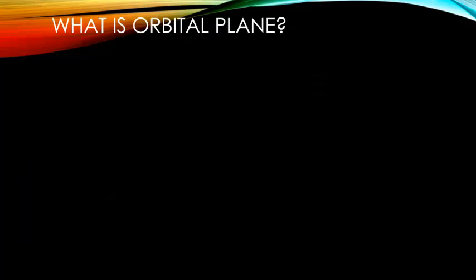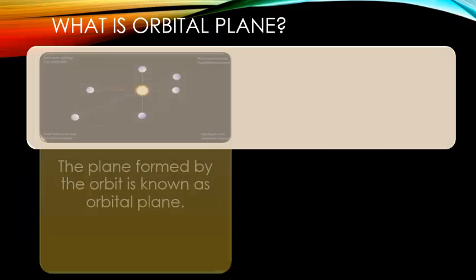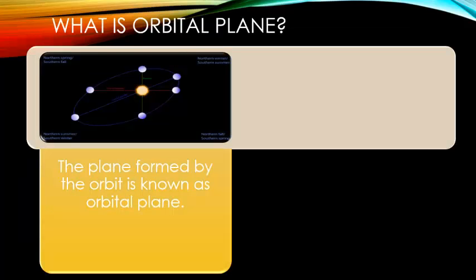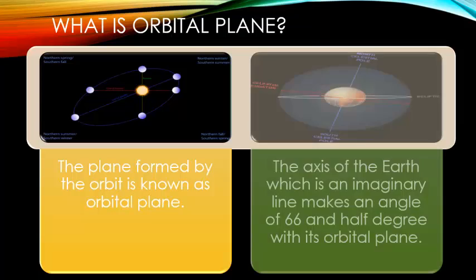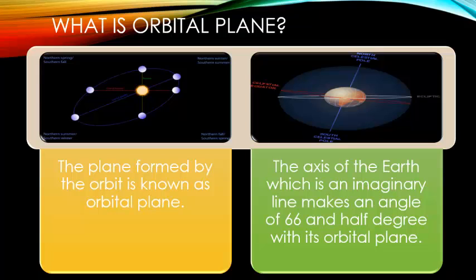What is orbital plane? The plane formed by the orbit is known as orbital plane. The axis of the earth, which is an imaginary line, makes an angle of 66 and a half degrees with its orbital plane.